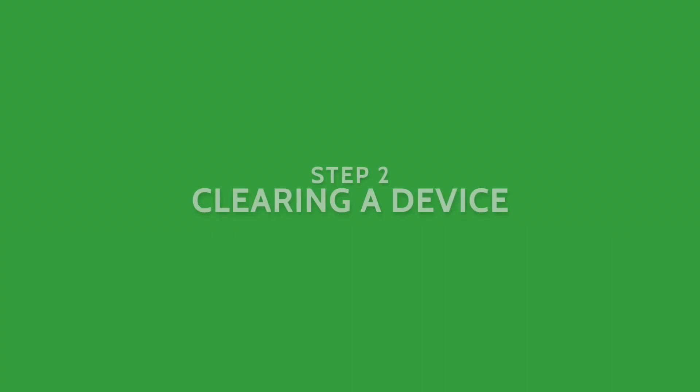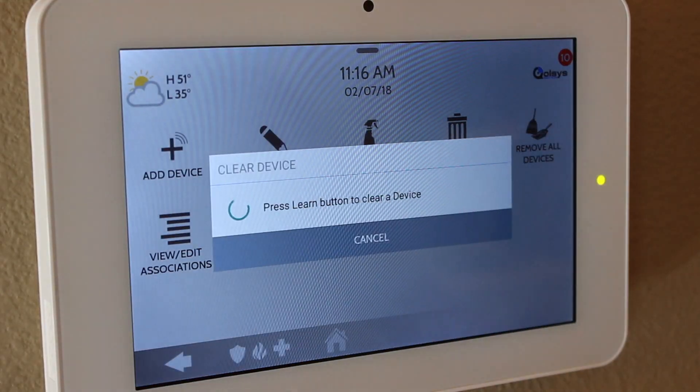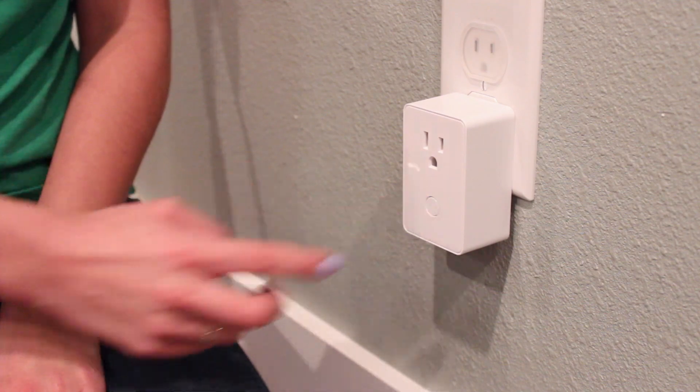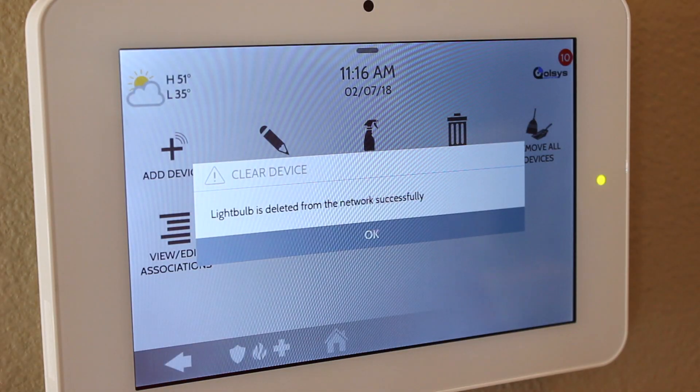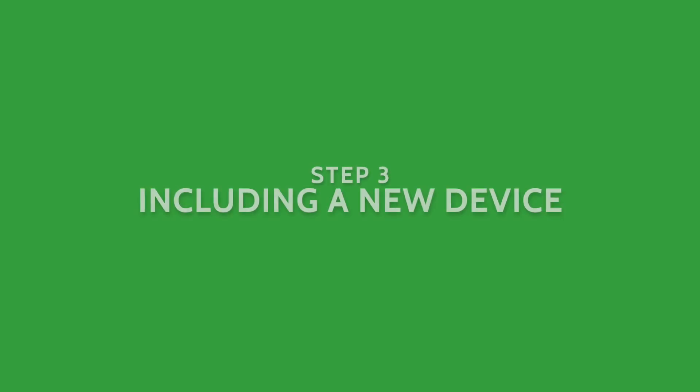Z-Wave devices are unique in that they can only be used in a single network at a time, so there are a couple of things you should do to ensure a smooth inclusion process. Sometimes a device is tested by being added to a Z-Wave network before it leaves the factory, so the first thing you should do is clear the device's memory before attempting to add it to your network. Simply press clear on the panel and the corresponding button on the device itself until it is deleted from the network successfully.